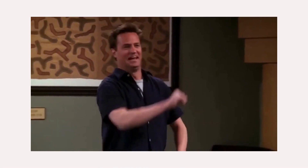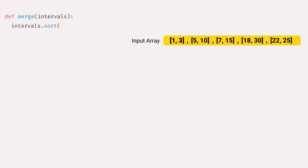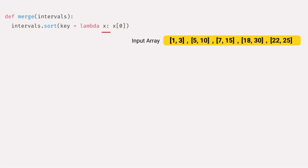Now let's see the code for this problem. I will start by declaring a function called merge, which takes an argument of a nested array of intervals. Next, I will sort my intervals by start time using the key parameter in the sort function. The key is a lambda function — an anonymous function that doesn't have a name, supported across different programming languages.